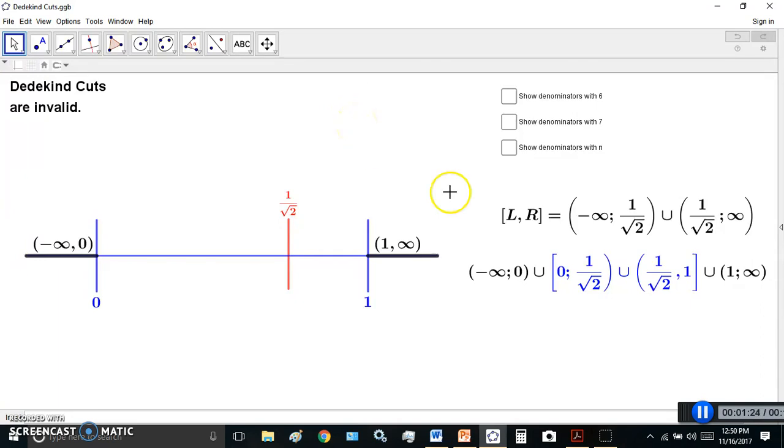What happens is you have the Dedekind cut being defined as two sets, as you see here, as the union of two sets of rational numbers. And of course, the union of these sets are all the rational numbers.